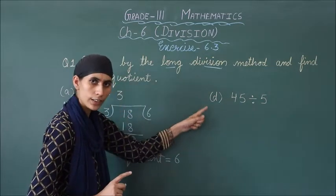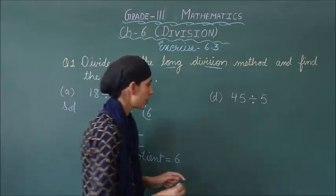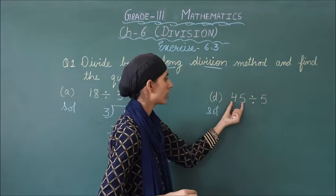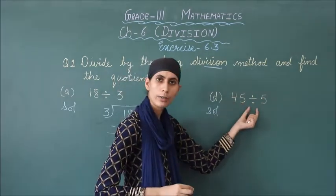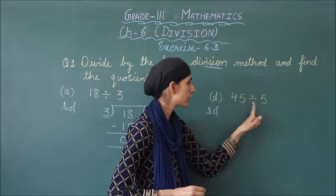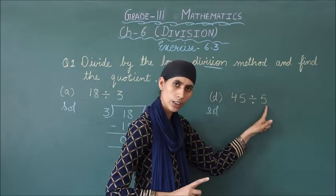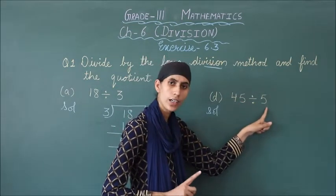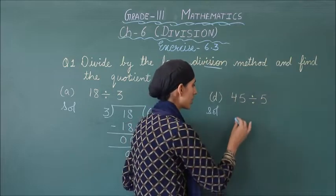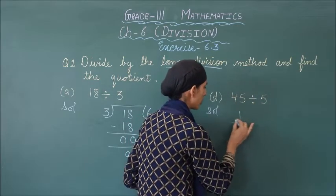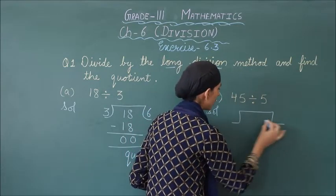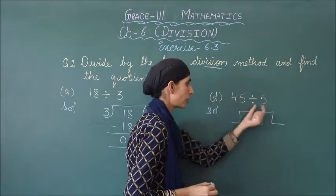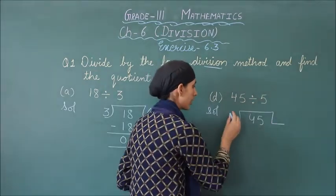So this is the next part so that you can understand it. Your D part is 45 divided by 5. 45 ko kisse divide karna hai? 5 se. So this is your dividend, this is the divisor. Ab hum iska quotient find out karenge. Uske liye hum 45 ko likhenge, then 5 se divide karna hai.